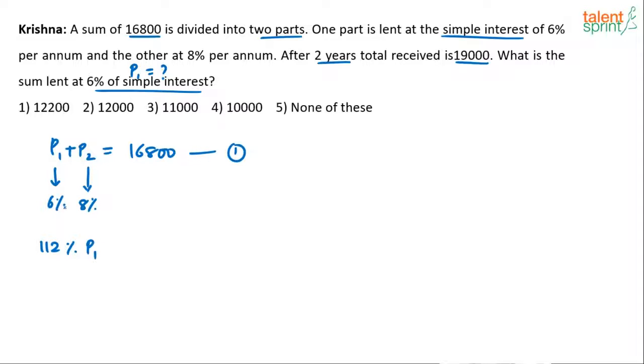6% in one year means 12% in two years. We have P1, and we earn 12% on it. So P1 plus 12% of P1 makes 112% of P1. The principle 100% is there, plus 12% extra.